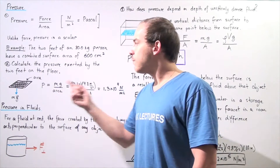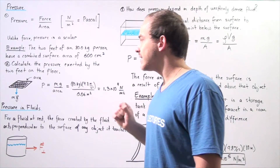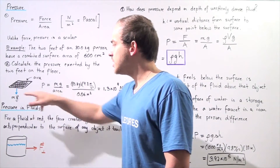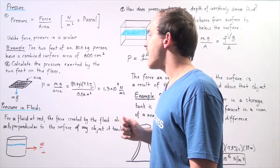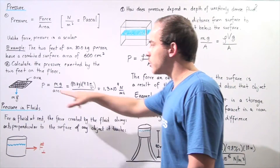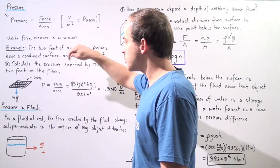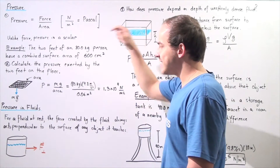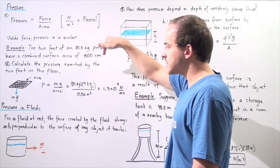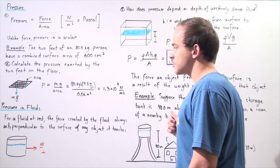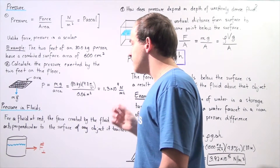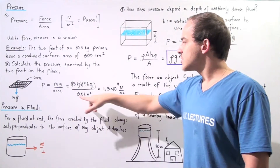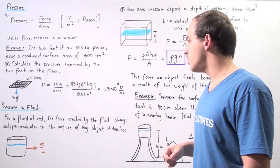The force acting on this area is the force of gravity acting on the mass of the person. The force, which acts at a perpendicular angle with respect to the area, is m times g, where m is our mass of the person. So pressure equals m times g divided by area. m times g is 80 kilograms times 9.8 meters per second squared, and the area in meters squared is 600 centimeters squared divided by 10,000, giving 0.06 meters squared.